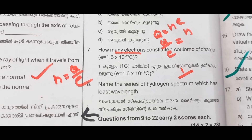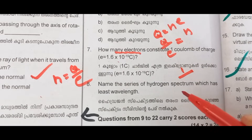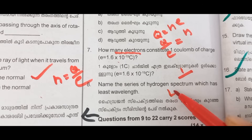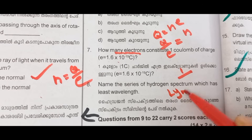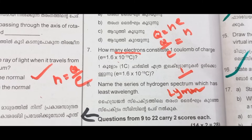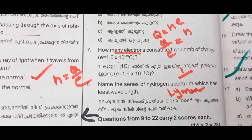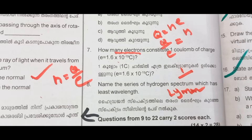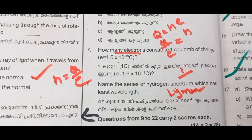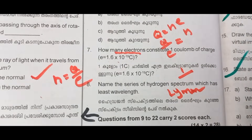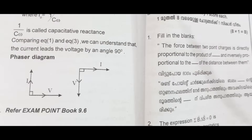Name the series of the hydrogen spectrum which has the least wavelength. The answer is the Lyman series, which has the least wavelength in the hydrogen spectrum.